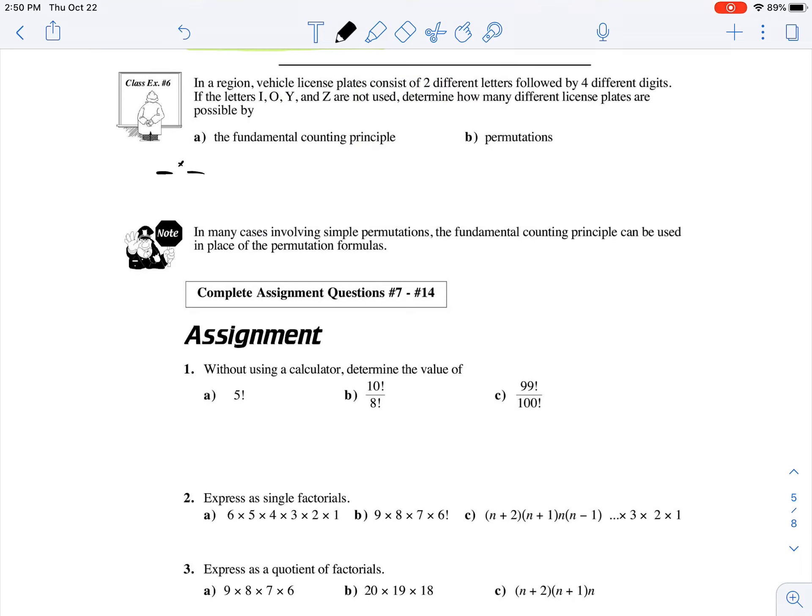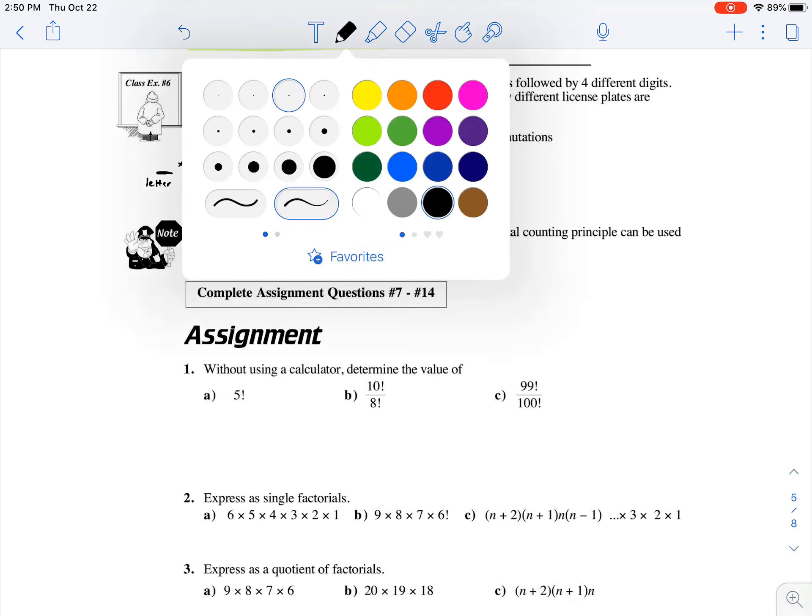Okay, so the license plate consists of two different letters. One, two. So that's a letter, and that's a different letter, followed by four different digits. One, two, three, four. So a digit, digit, digit, digit. If they're saying that they're different, no repeats.